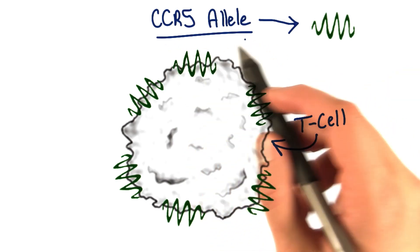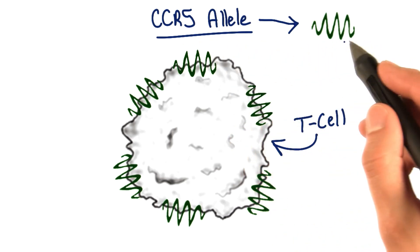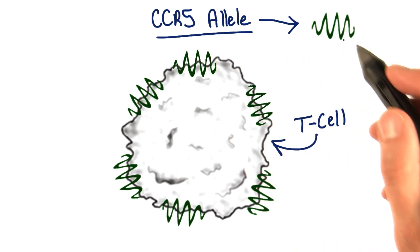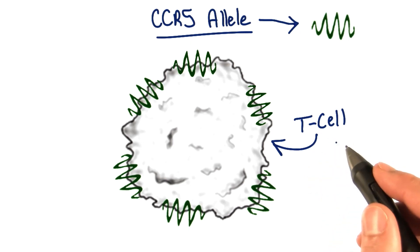The CCR5 gene is located on human chromosome 3 and produces a protein, the CCR5 protein, that you can see here in green. It resides on the surface of T cells. T cells are immune cells that fight infection.